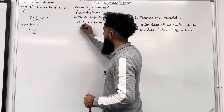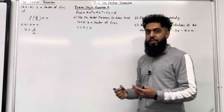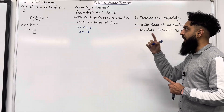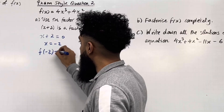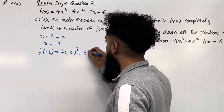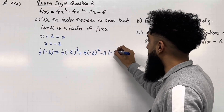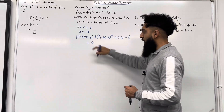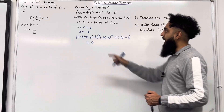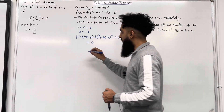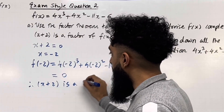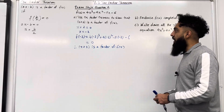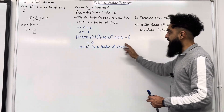Let's look at Part A. The first step is to set x + 2 = 0, which gives x = −2. Substitute x = −2 into f(x): f(−2) = 4(−2)³ + 4(−2)² − 11(−2) − 6. Putting this into the calculator gives 0. The 0 is the remainder. Since the remainder is 0, we conclude that x + 2 is a factor of f(x). Part A is worth two marks: one for calculating f(−2) = 0, and one for the conclusion.